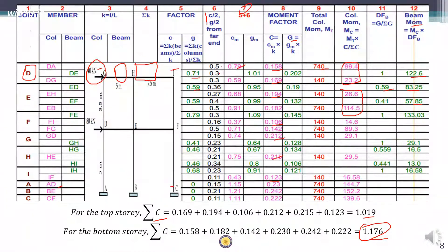Once you have all the column moment and beam moment values, you can draw the bending moment diagram, which will be similar to that obtained in the previous methods. The values are already listed in the table, for example the value for one member is 99.4. Similarly you can compile the complete bending moment diagram. That's it for today's lecture, thank you.